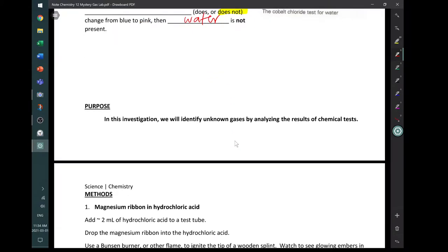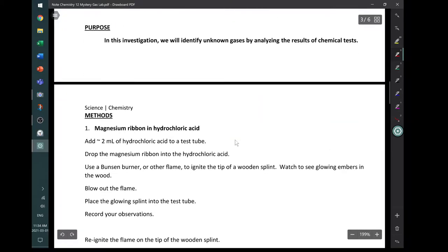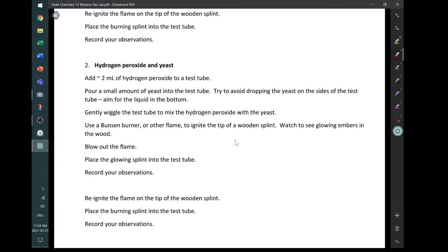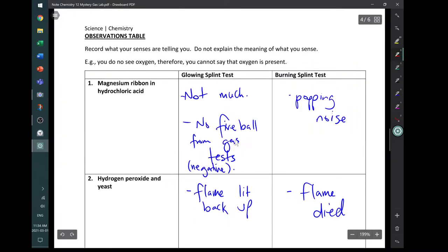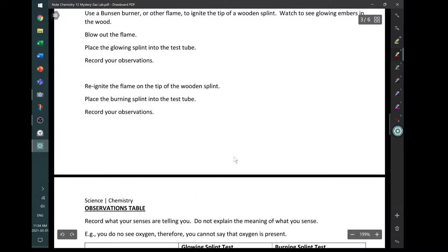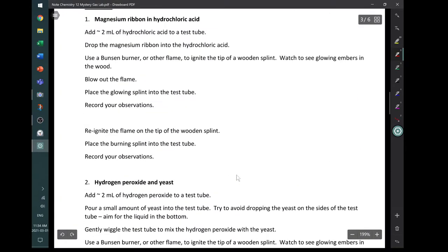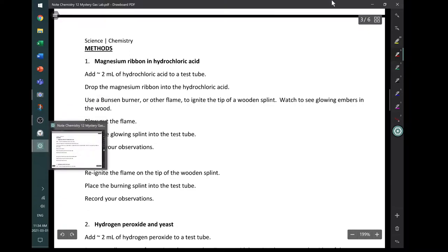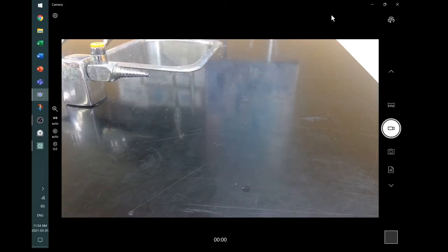Now, our purpose in the investigation is to identify unknown gases by analyzing the results of chemical tests. So we're going to do a few tests here. It's a good idea to pause it and read through the instructions yourself. I'm going to read through the instructions as I go through the actual demonstrations of the two tests. We're going to do this magnesium ribbon and hydrochloric acid, then hydrogen peroxide and yeast. And there's a place to record your observations. So you want to grab that so that you can record your observations.